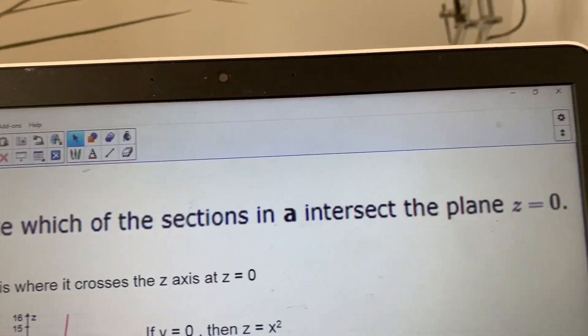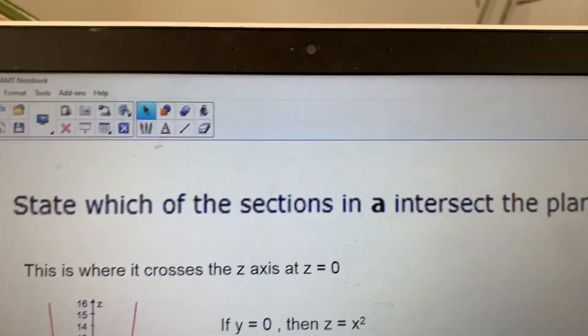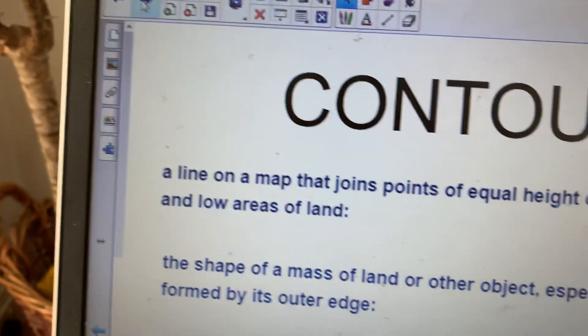So normally, solving something like this would be when Y equals 0. But of course, your vertical axis is Z equals 0. So there were just two graphs in this question.